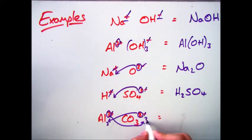and 3 goes down after the carbonate. Now we've got CO3 3, so again, you need to have a bracket. So it's Al2, open brackets, CO3, close brackets, 3.